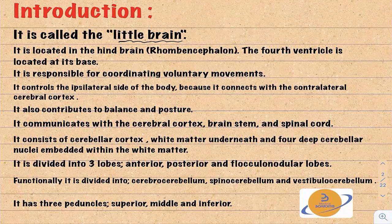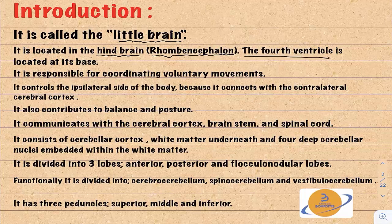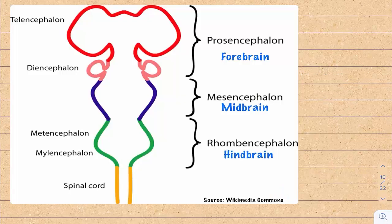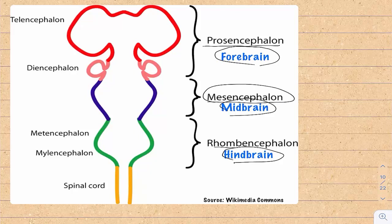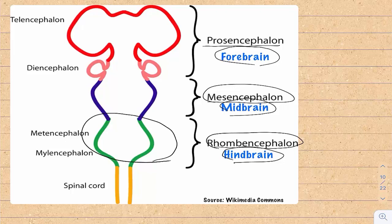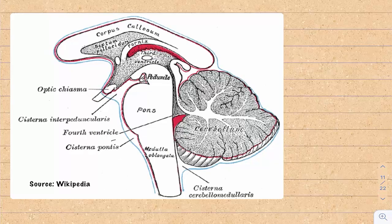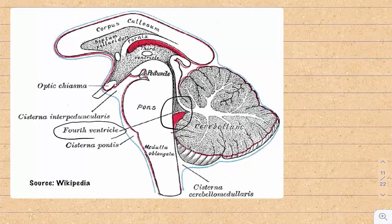The cerebellum is located in the hindbrain, or rhombencephalon — an embryologic term. The fourth ventricle lies at the base of the cerebellum. During embryology, the brain is divided into three parts: the forebrain (prosencephalon), the midbrain (mesencephalon), and the hindbrain (rhombencephalon), named for its rhomboid shape. The fourth ventricle lies at the floor of the cerebellum, meaning lesions here may obstruct CSF outflow and cause hydrocephalus.